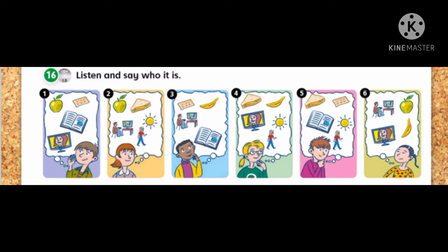Number 4. He wants an apple and a biscuit. He wants to read a book and watch TV. It's number 1.